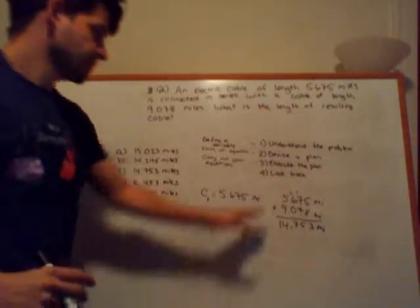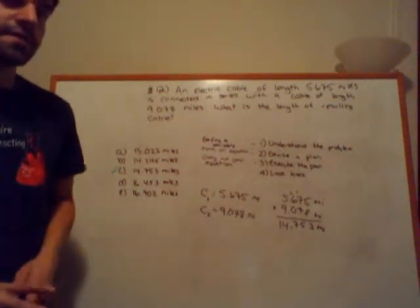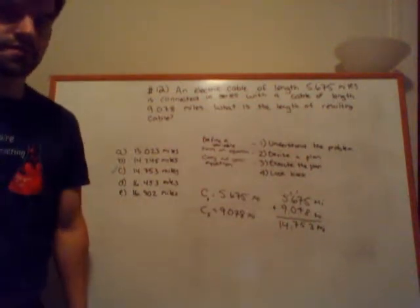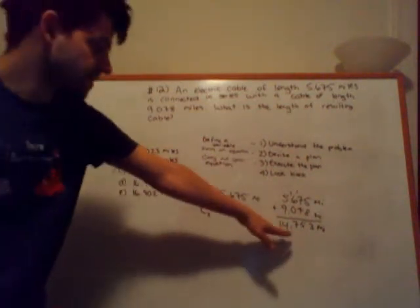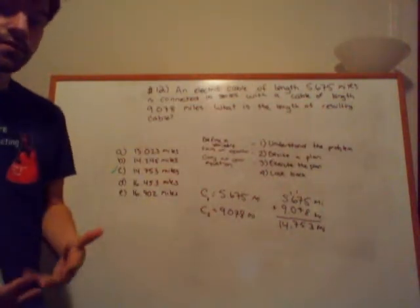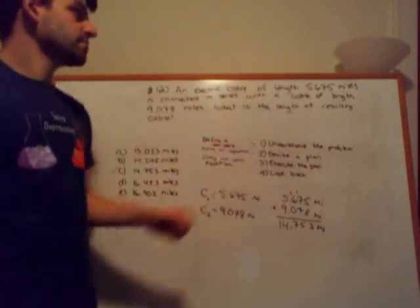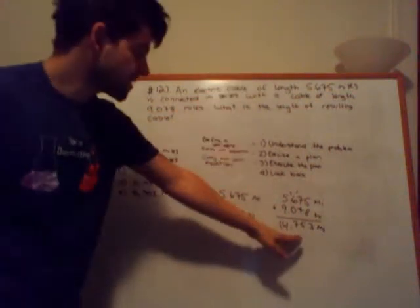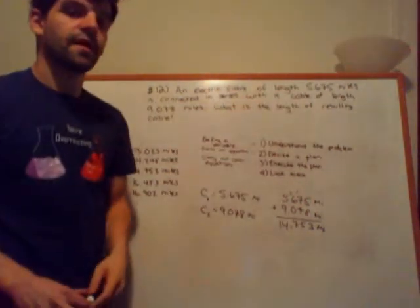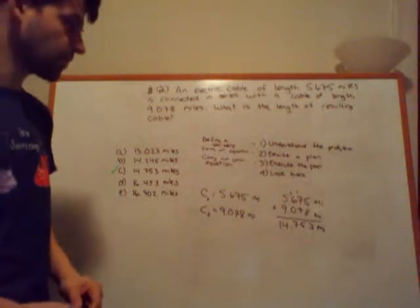Now, let's look back for step number 4. If we wanted to make sure that this answer makes logical sense, the first thing that we can ask is, well, if this is a sum, then the value we come up with has to be larger than both of the original variables, which it is. 14.753 is greater than both 9.078 and 5.675. That's a good start. Another way that we can check our answer is if we take 14.753 and subtract either of these two values, we'll get the other value. So if we take 14.753 miles, subtract off 9.078 miles, we will indeed get 5.67 miles, which allows us to conclude that our answer doesn't make logical sense.